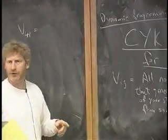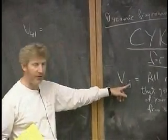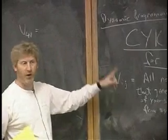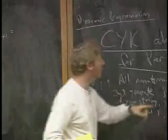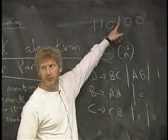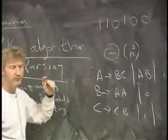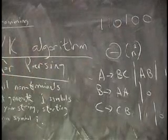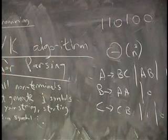Let's do v_4,1. v_4,1 are all the non-terminals that can generate one symbol starting at position 4 of this string. 1, 2, 3, 4. That means the single string 1. Which non-terminals can generate the single string 1?